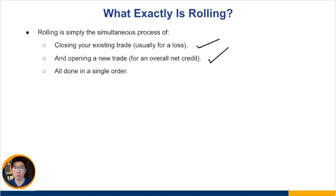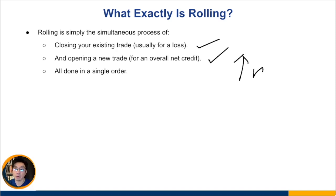This is very important because if you were to roll for a net debit, what it means is that you're actually increasing your overall risk and reducing your overall max profit. You want to have a net credit because with a net credit, you will be increasing your max profit, and if you increase the max profit, you will actually be reducing your max loss.